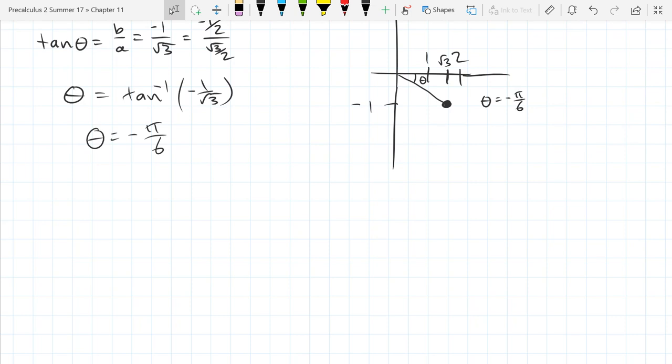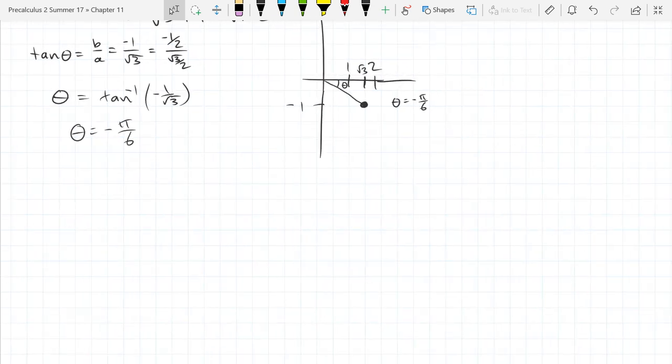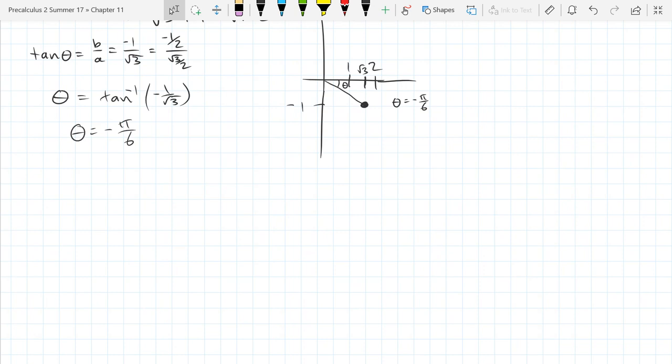So we're going to do one more example of conversion. We're going to convert the opposite direction, which actually is a whole lot easier. 4 e to the i negative 3 pi over 4. Convert to rectangular.